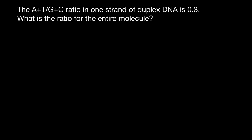Let me rewrite this ratio as a fraction. We have adenine plus thymine divided by guanine plus cytosine. And now let's identify which are purines and which are pyrimidines.